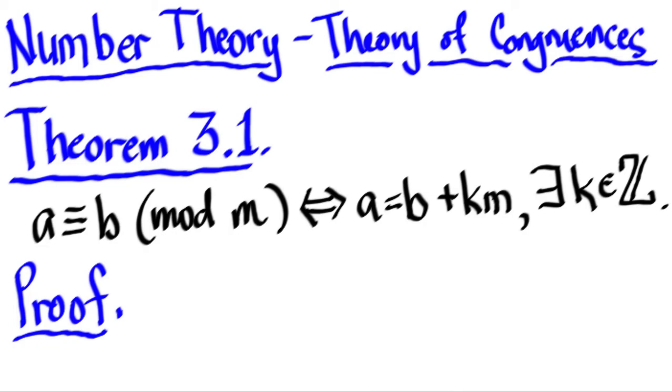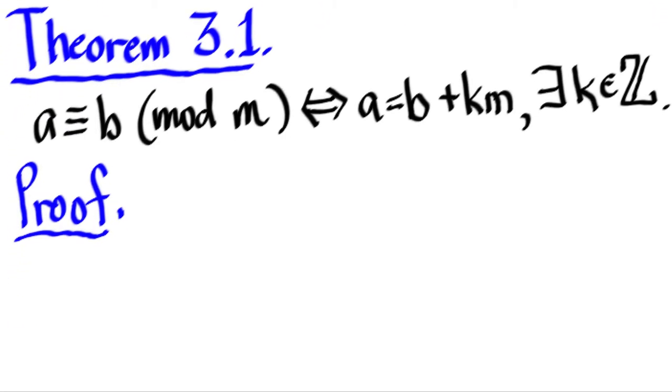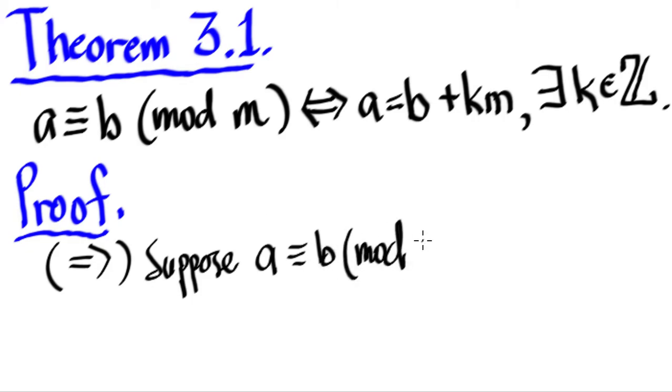So let's give a proof for this. Since it's an if and only if statement, we need to have the proof going from this statement to this statement, and from this statement to this statement. So let's start with the only if part. Let us suppose that A is indeed congruent to B mod M.